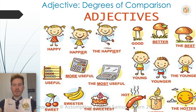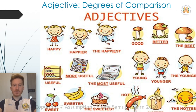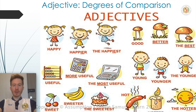Some adjectives are irregular. For example, good does not become 'gooder' — it becomes better. And it does not become 'the goodest' — it becomes the best. Good, better, the best. There are also cases when we do not add ER or EST. For example, 'useful' — we do not say 'useful-er', we say 'more useful'. And we do not say 'useful-est', we say 'the most useful'. Useful, more useful, the most useful.